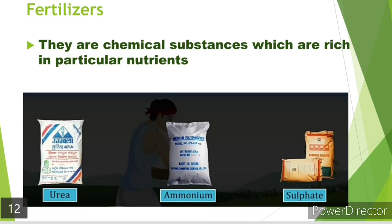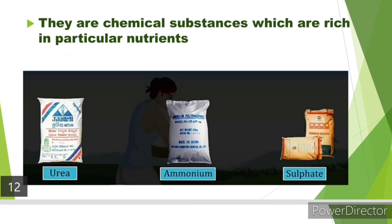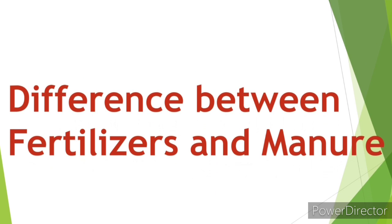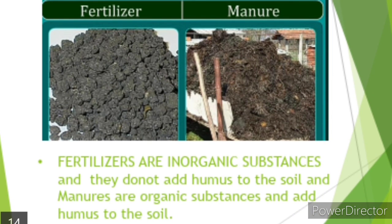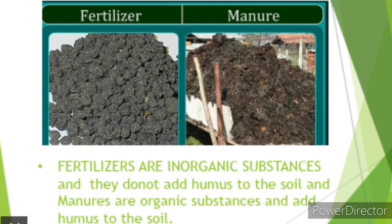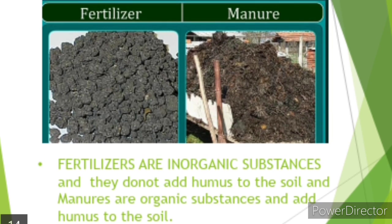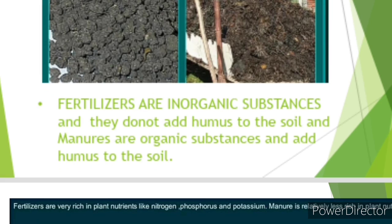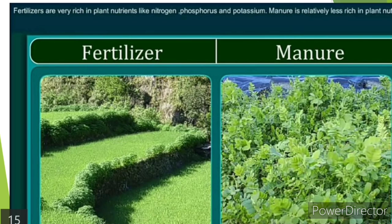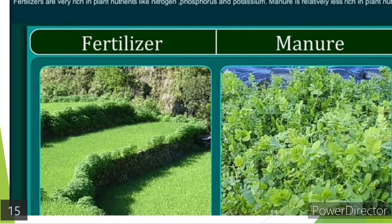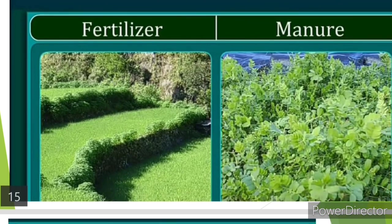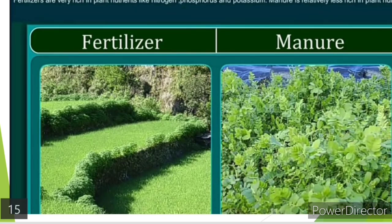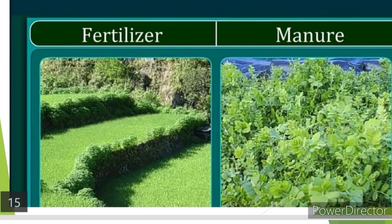Let us now discuss the differences between fertilizers and manures. First, fertilizers are inorganic substances whereas manures are organic substances. Fertilizers do not add any humus to the soil, while manure does add humus. Fertilizers are very rich in plant nutrients like NPK — nitrogen, phosphorus, and potassium — so they enhance the growth of plants, but manure is relatively less rich in plant nutrients.